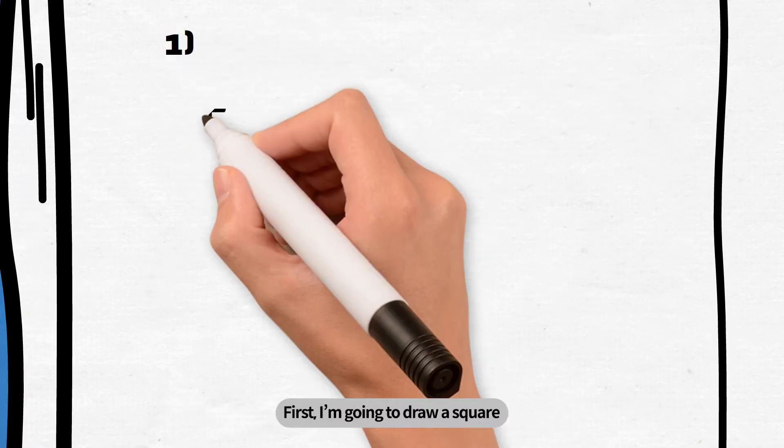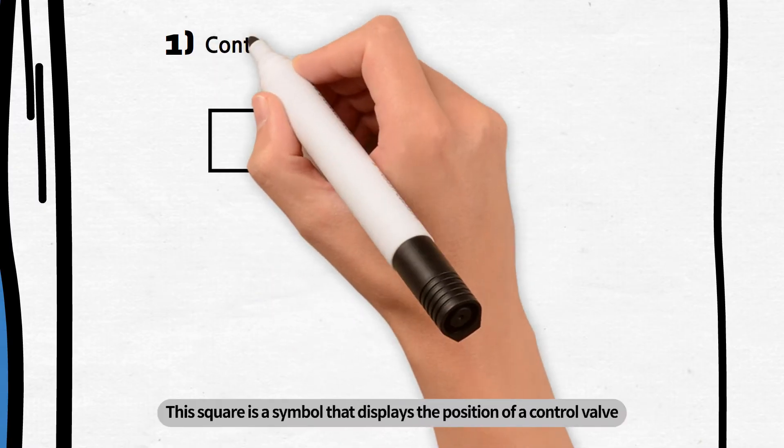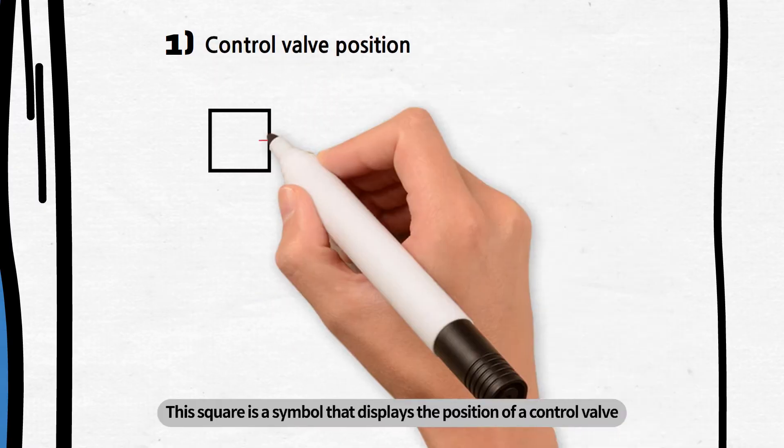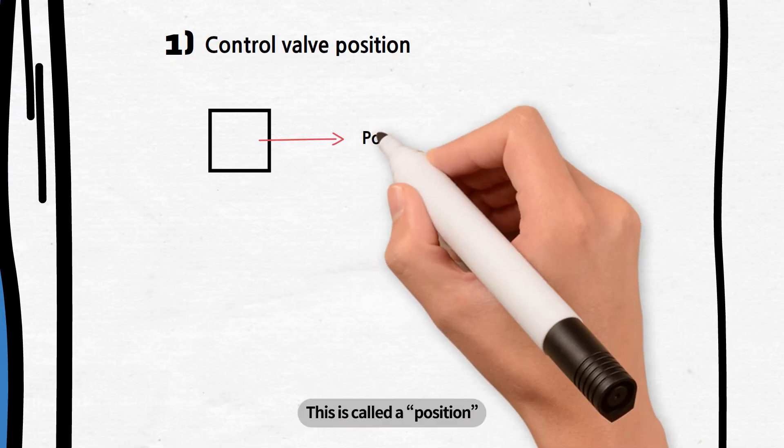First, I'm going to draw a square. This square is a symbol that displays the position of a control valve. This is called a position.